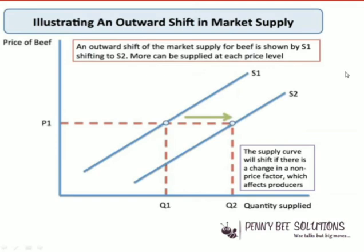An outward shift happens when there is an increase in supply — the supply curve moves to the right from its position, from S1 to S2. More can be offered and supplied at this point. The supply curve will shift if there is a change in non-price factors affecting producers, though there can be price factors as well.